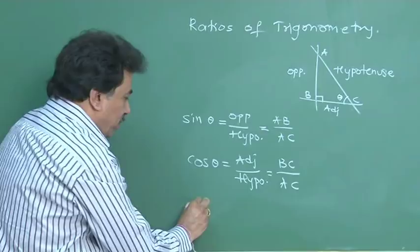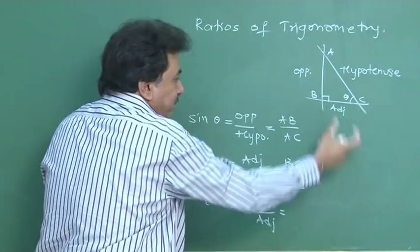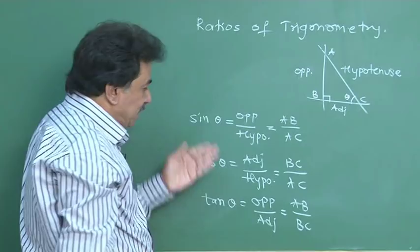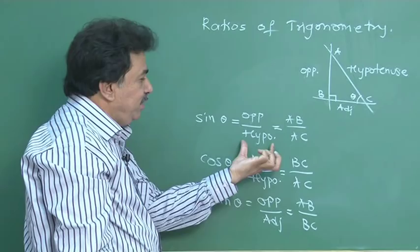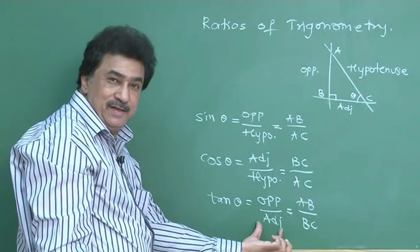And the last one is tan theta — that is opposite upon adjacent, which gives AB upon BC. So: sine theta is opposite upon hypo, cos theta is adjacent upon hypo, and tan theta is opposite upon adjacent.